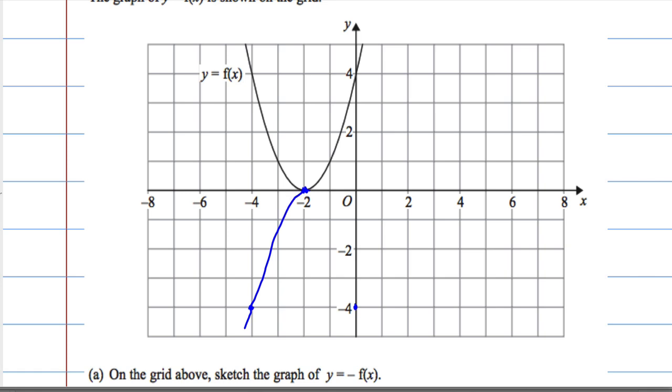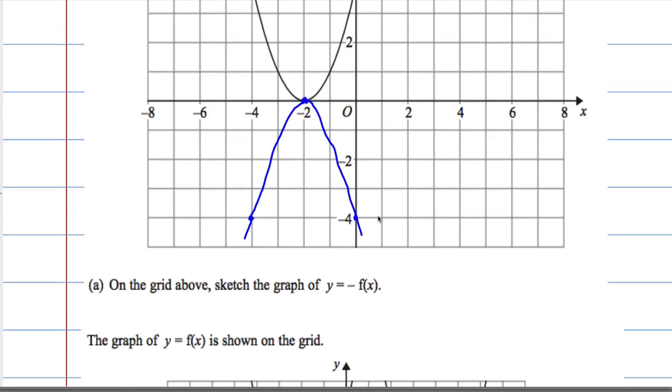Now, if you had something, say, y equals minus 2 f of x, the graph will actually get bigger in a vertical direction, but it won't change in the horizontal direction. But do check out our tutorials on transformations or transformations of graphs.